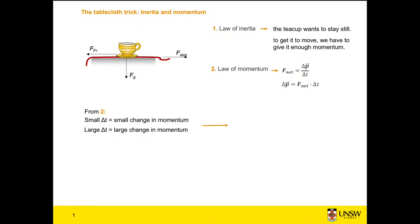So one of the key points to this trick is that we need to pull the tablecloth fast enough. So the faster we pull the tablecloth, the smaller the change in momentum on the teacup will be, and the more likely it is that the teacup will stay still by Newton's first law.